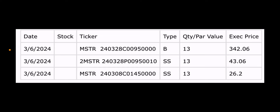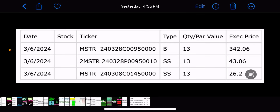MSTY — the underlying is MSTR — had three transactions yesterday, and this one was normal because people actually bought into the fund. It's a buy call — the 'B' stands for buy call — 13 contracts, and then sell put, again 13 contracts — that's the synthetic position. Down below, they're selling a call on the weekly expiring in two days on Friday, March 8th. Let's look at that in the spreadsheet.